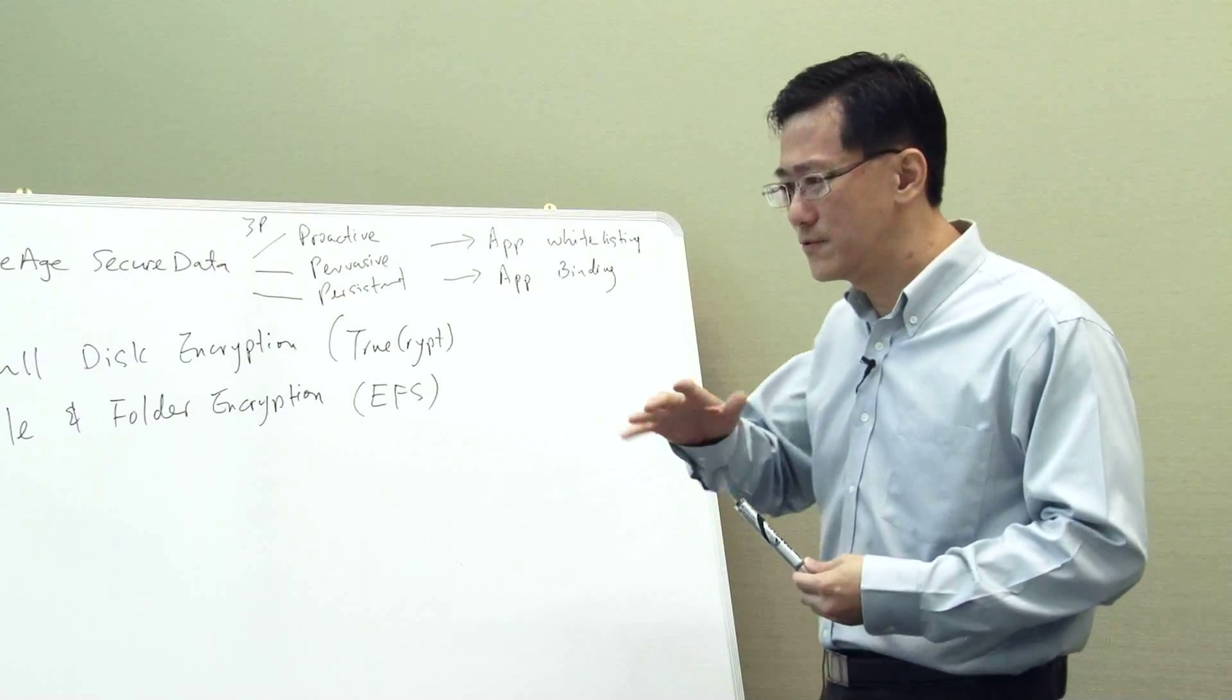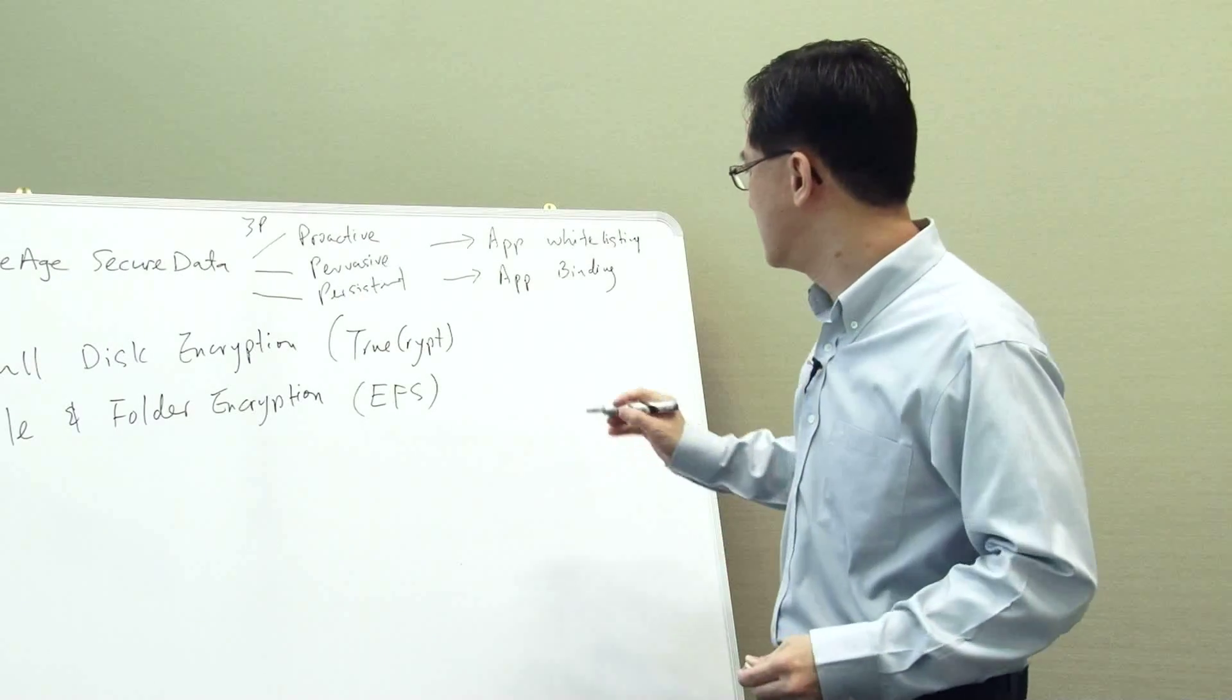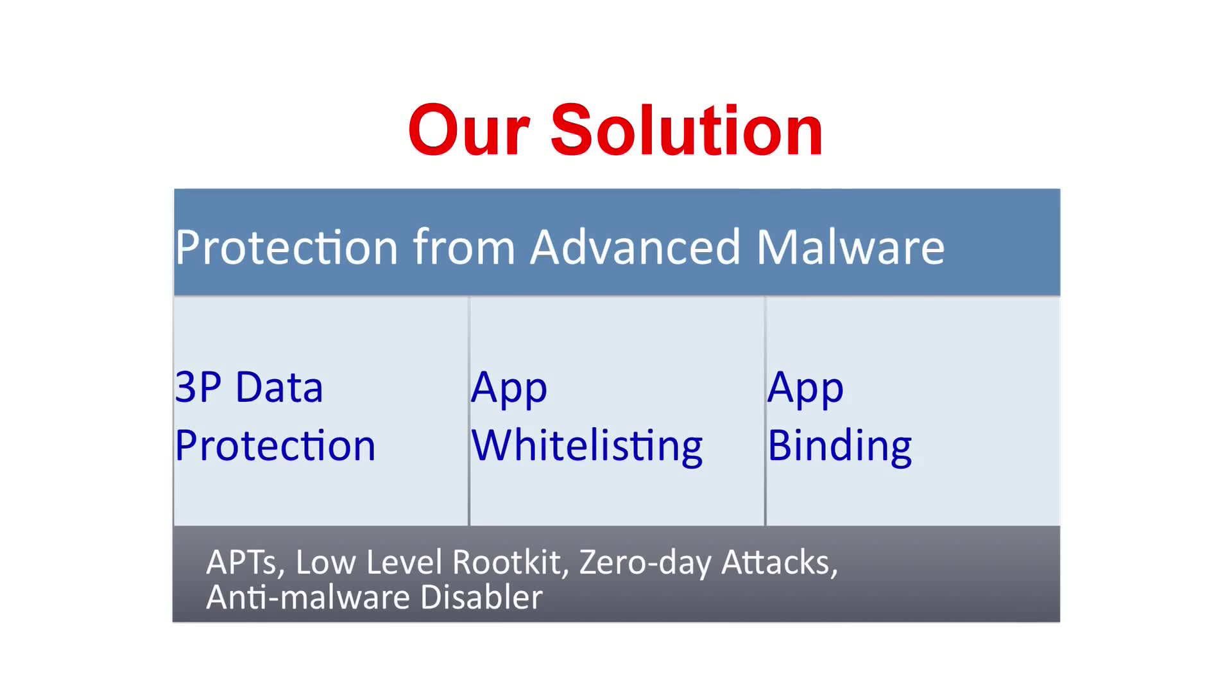There are a few things, especially those very stealthy kinds of malware, it's difficult to protect against. So let me list now those things that application whitelisting are not good at catching. The first one is called rootkit, the second one we call it anti-malware disabler, and the third one we call it zero-day attack.